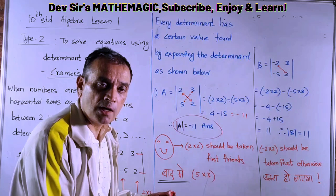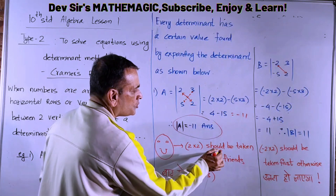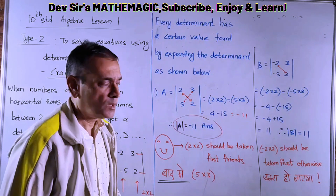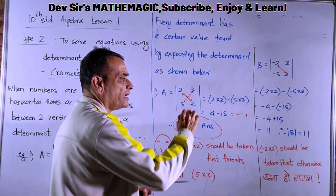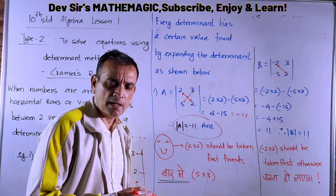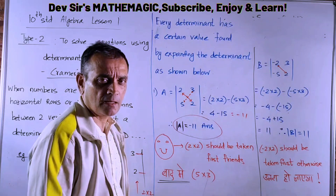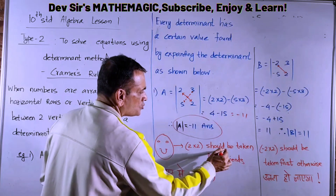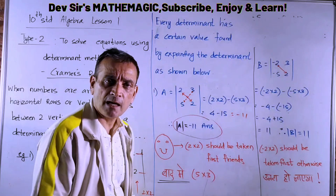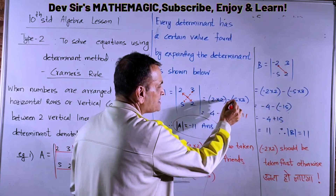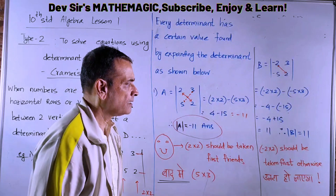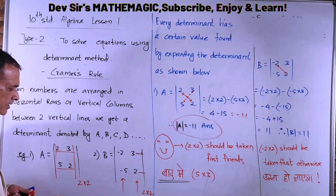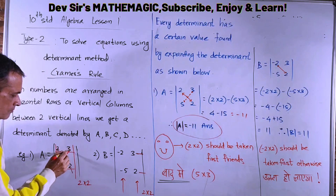Very important rule: 2 into 2 should be taken first, then minus 5 into 3. The top-left to bottom-right diagonal (solid line) is always taken first, followed by the other diagonal (dotted line) with a minus sign. So the formula is: first diagonal product minus second diagonal product.